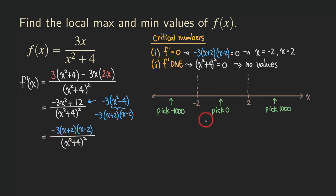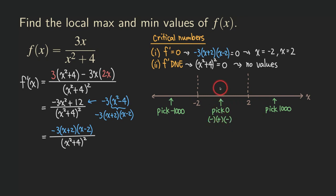When we plug zero in, the negative three gives negative, zero plus two gives positive, and zero minus two gives negative. The denominator is always positive because it is squared, so we only need to count the negatives in the numerator. We have two negative signs, which is an even number, so the result is positive. That means the function is increasing on the interval from negative two to two.